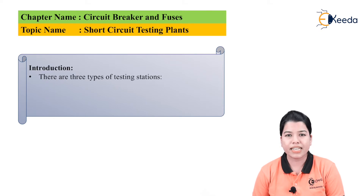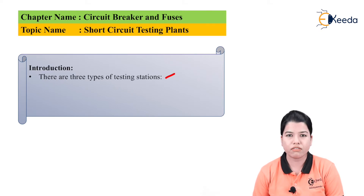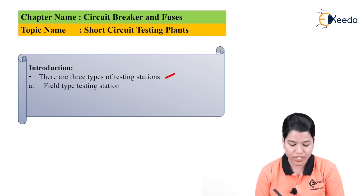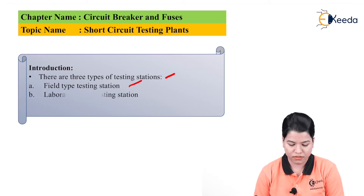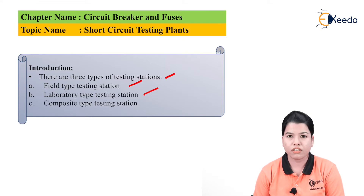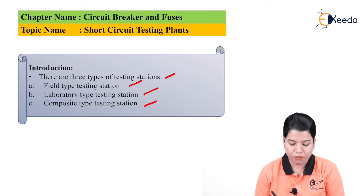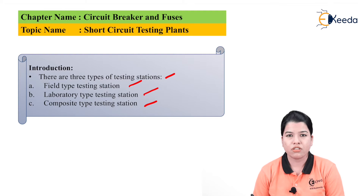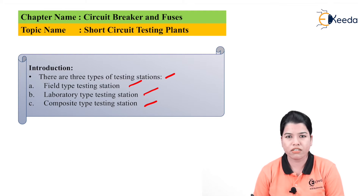There are three types of testing stations. First is the field type testing station. Second is the laboratory type testing station. Third is the composite type testing station. These are the three testing stations used for the short circuit test.